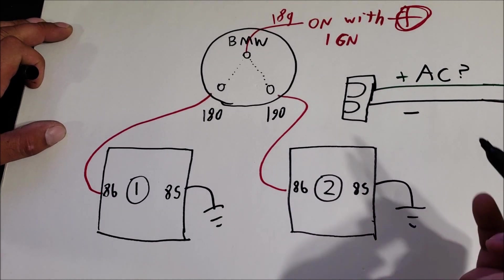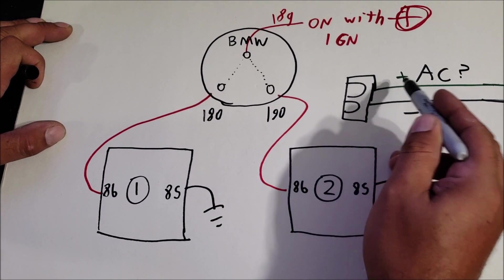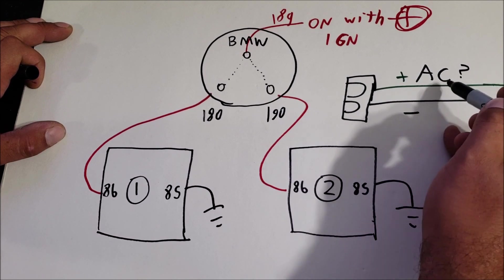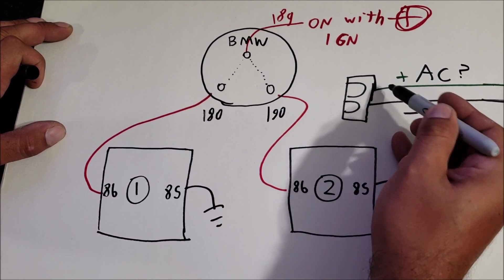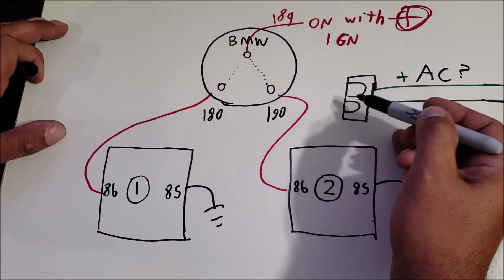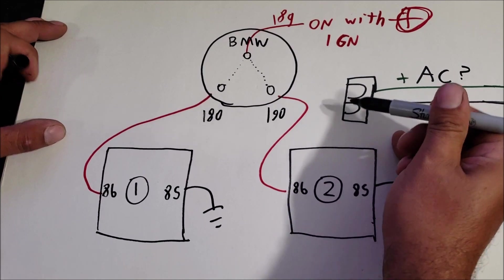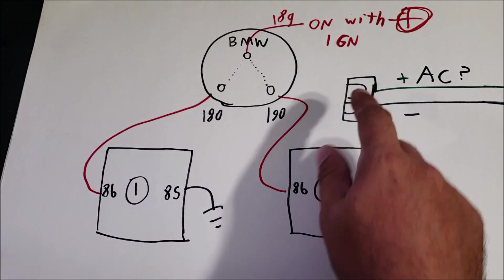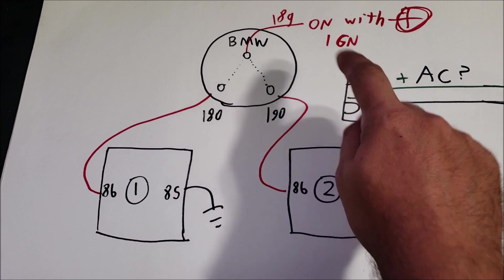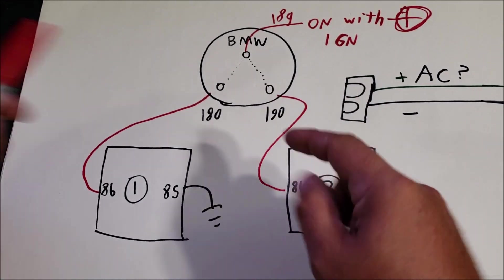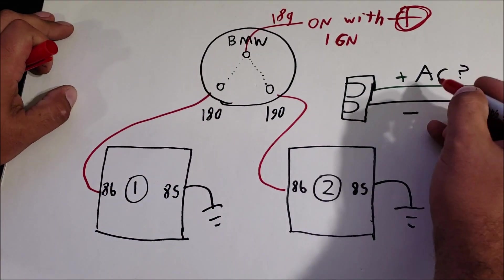So what about running air conditioner? On our GM we have green positive and black as the ground. Whenever you turn the AC on it powers this green wire. Now this is where it gets a little bit tricky. All you do is you bypass this hot wire in between right here to your number two fan.